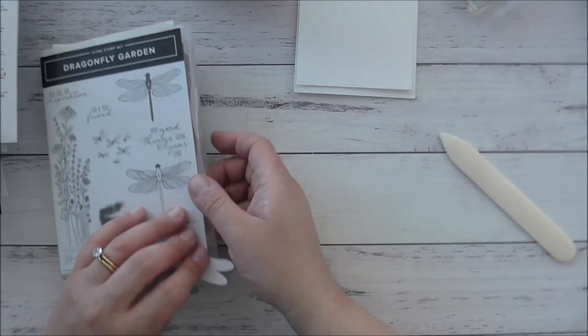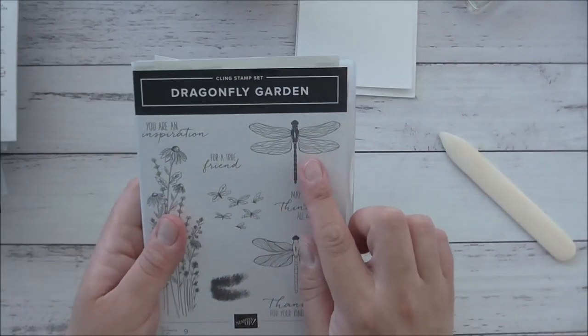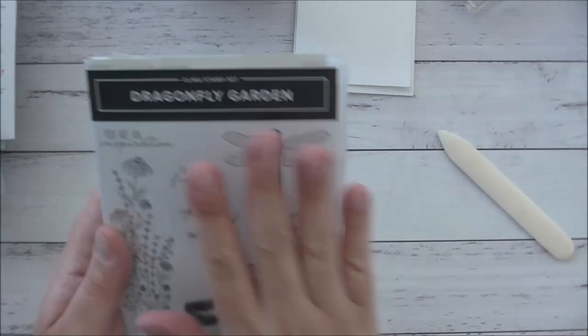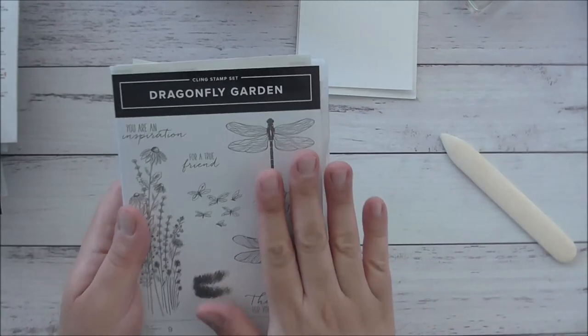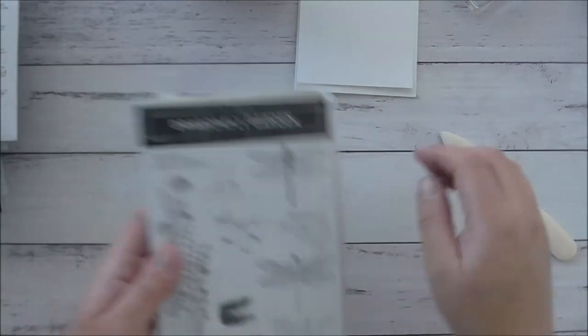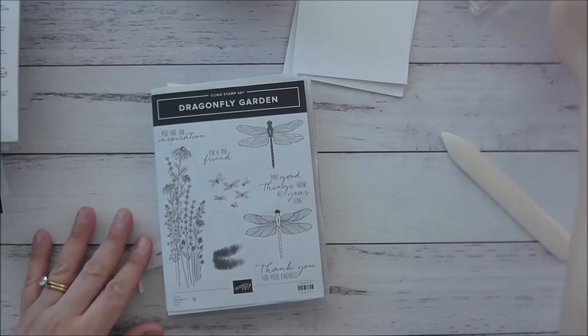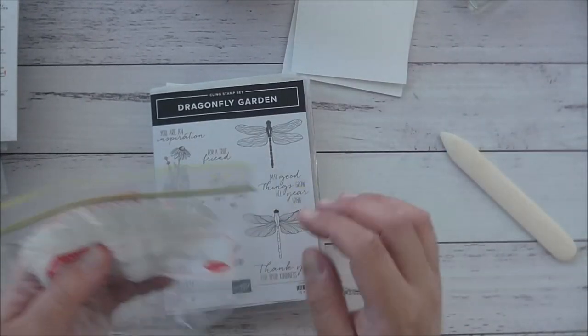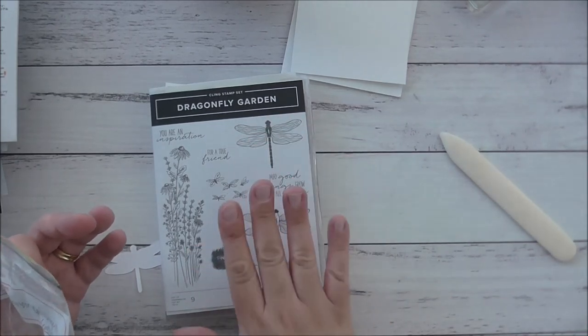So to start off with, I'm going to stamp the Dragonfly Garden, sorry from the Dragonfly Garden stamp set, I'm going to stamp this more open Dragonfly and what I have done is I cut out a whole bunch of these dragonflies in advance.